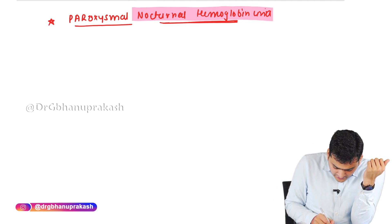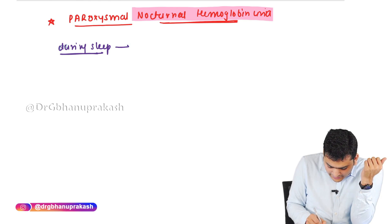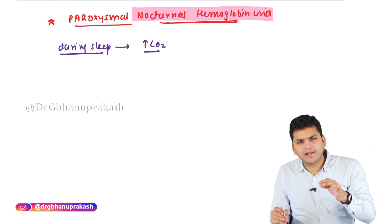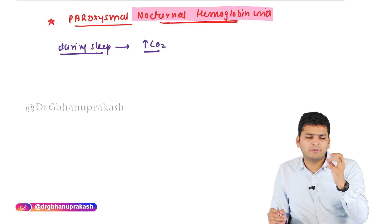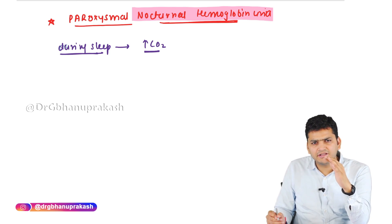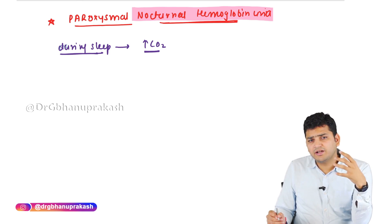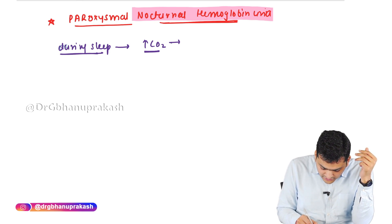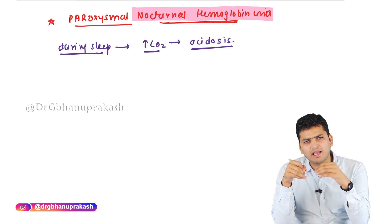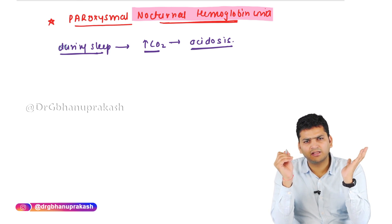During sleep, there is a slight increase in carbon dioxide in our body. When we fall into deep sleep, the respiratory rate decreases, causing CO2 to build up. Since carbon dioxide has an acidic nature, this leads to acidosis — the pH of the blood shifts slightly towards the acidic side. Around 3–4 AM, the blood is slightly acidic.